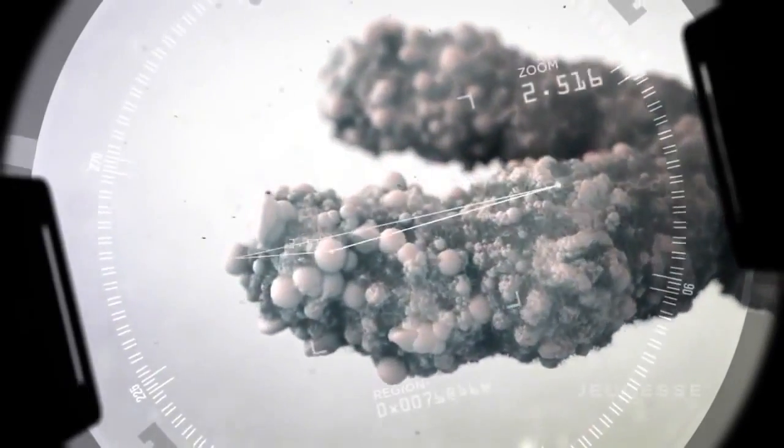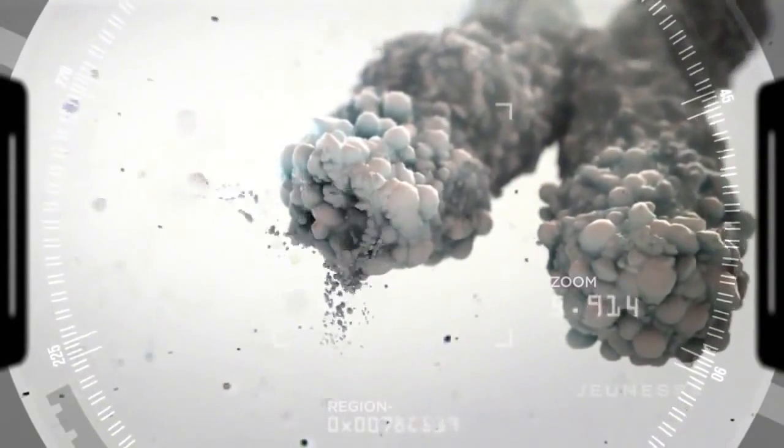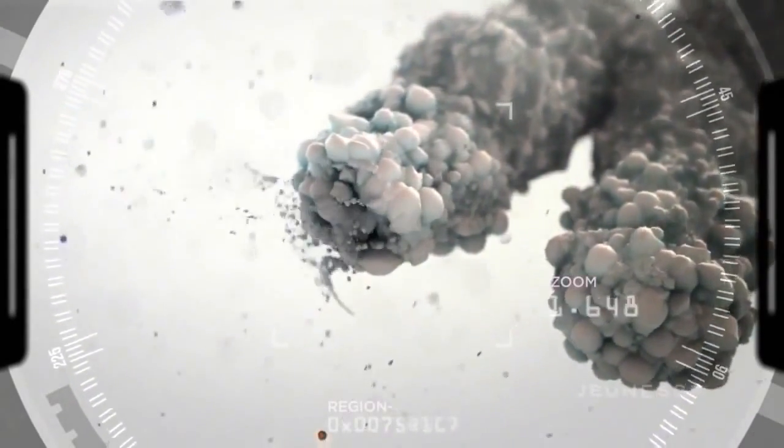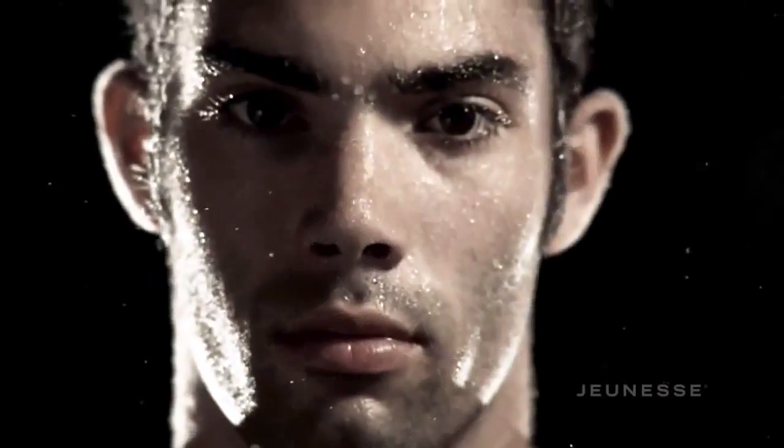When we are born, our telomeres are long, but as time goes on, they begin to shorten. So short, in fact, that our telomeres fray, similar to the end of a shoelace. And our journey called cellular aging begins.